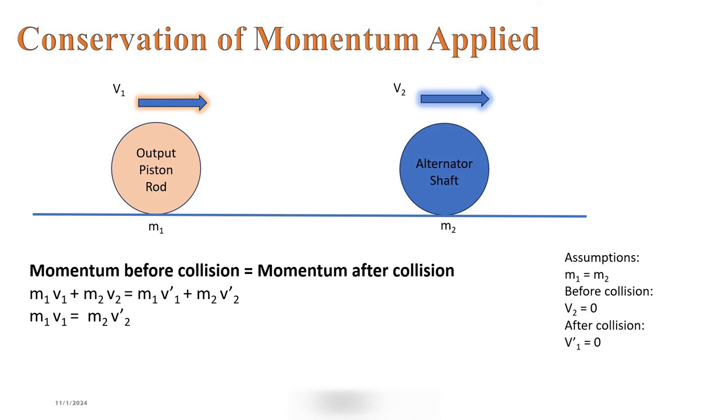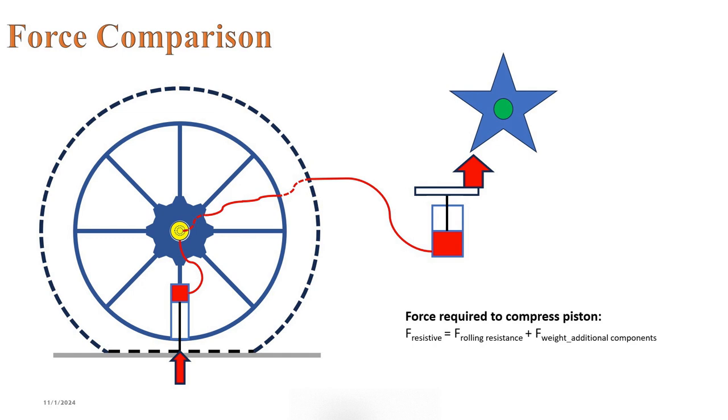Connecting the alternator to the battery will result in battery charging. The only resisted force that the power supply will witness is the rolling resistance and the weight of the additional components. If we were to make an educated estimation, the resisted force will not exceed 500 pounds for a mid-size sedan.